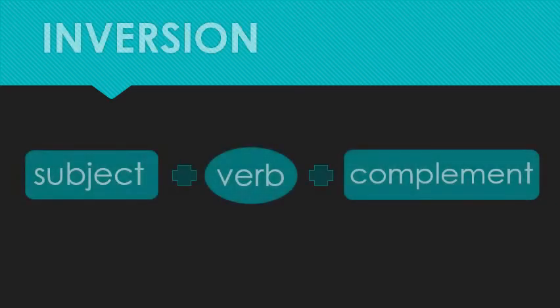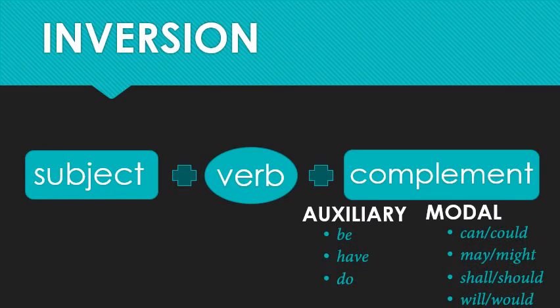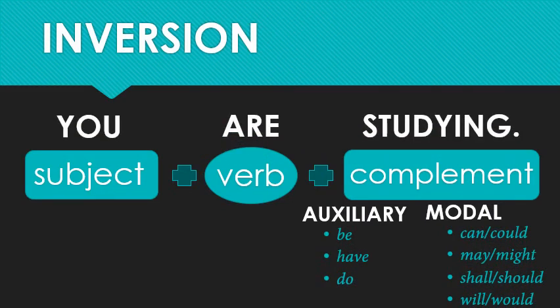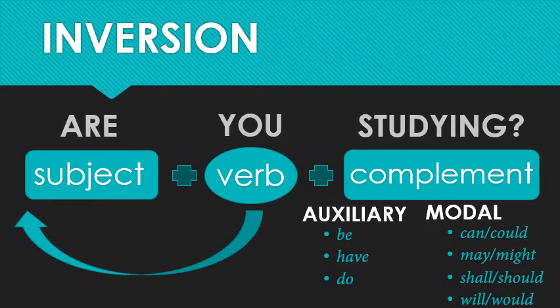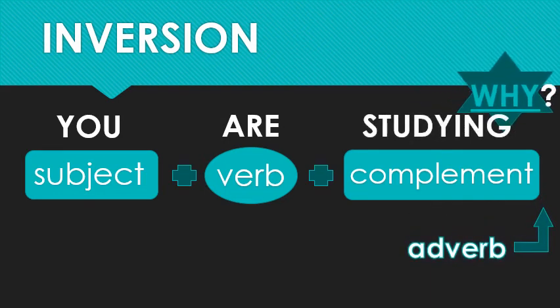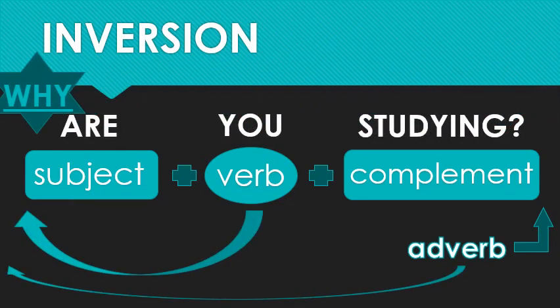The much more neutral and more common way to ask these questions, however, is through inversion. Inversion requires some sort of auxiliary verb. So 'you are studying' — you switch the subject and the verb, the verb goes first: 'are you studying?' Now when you want to add the question word, that adverb is actually going to go in front of the verb. So you have 'why are you studying?' The new word order becomes adverb, verb, subject, complement.